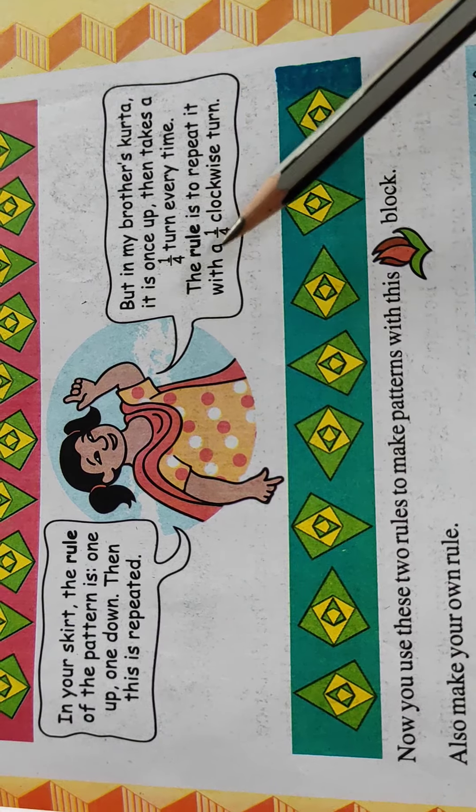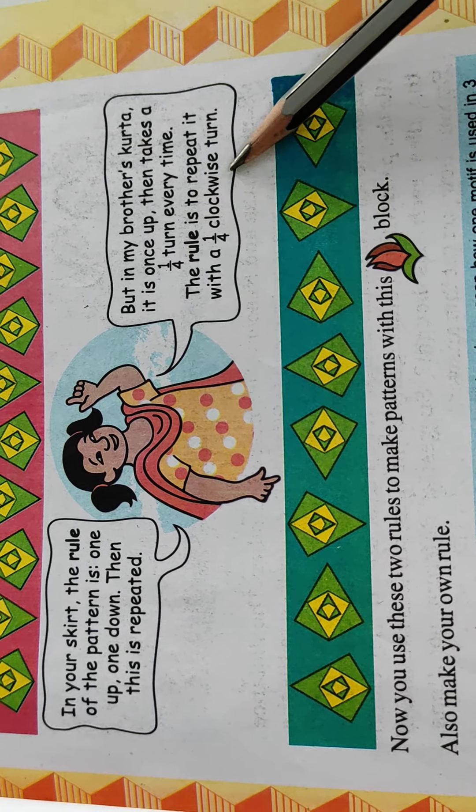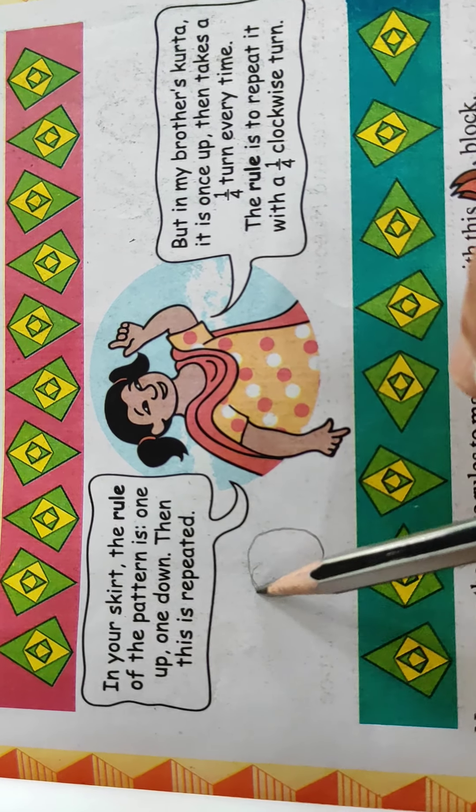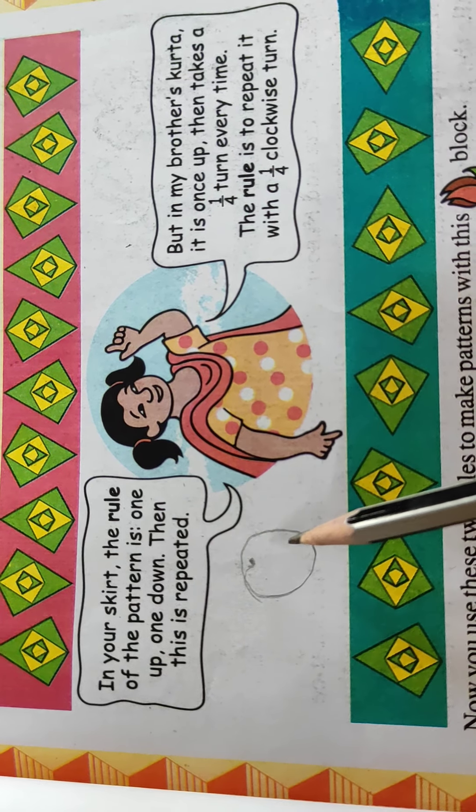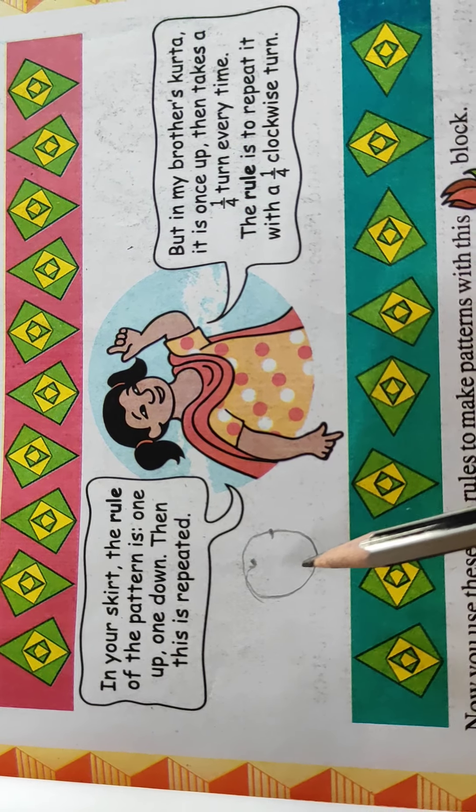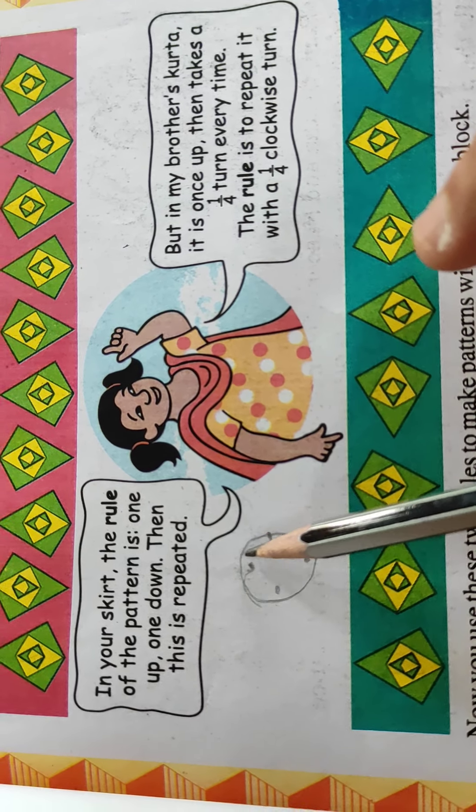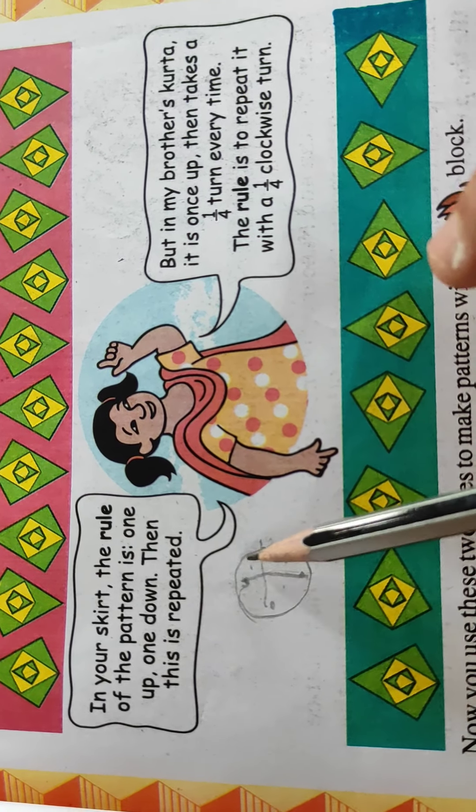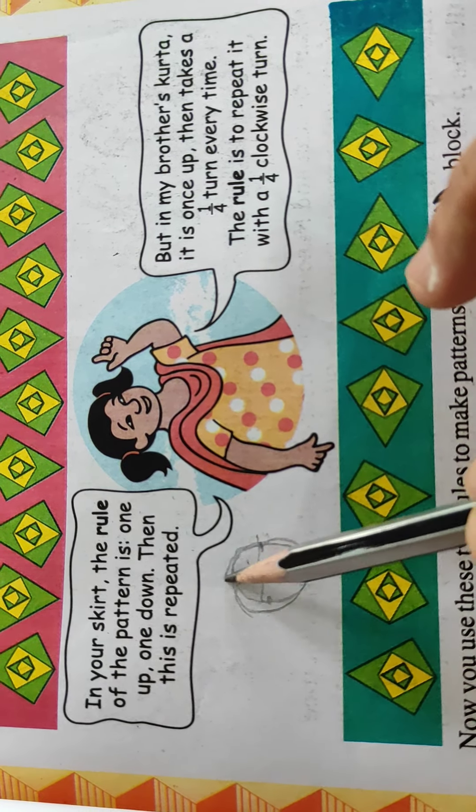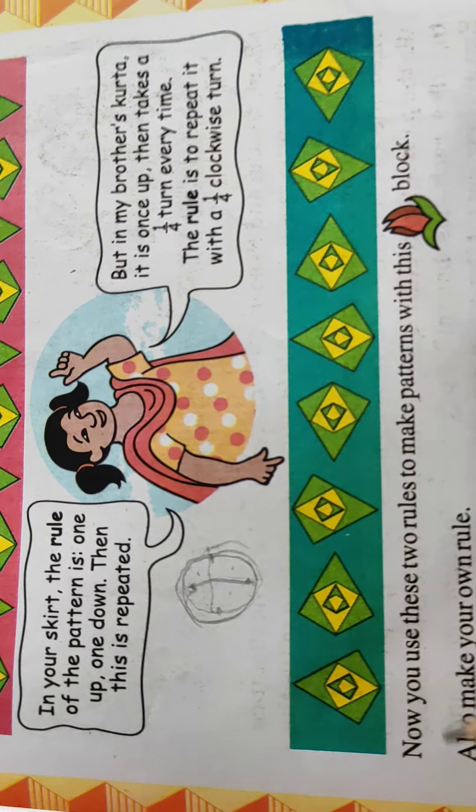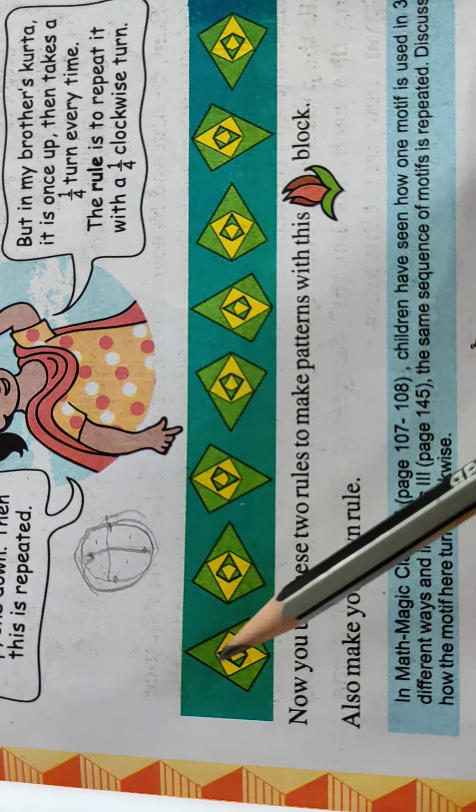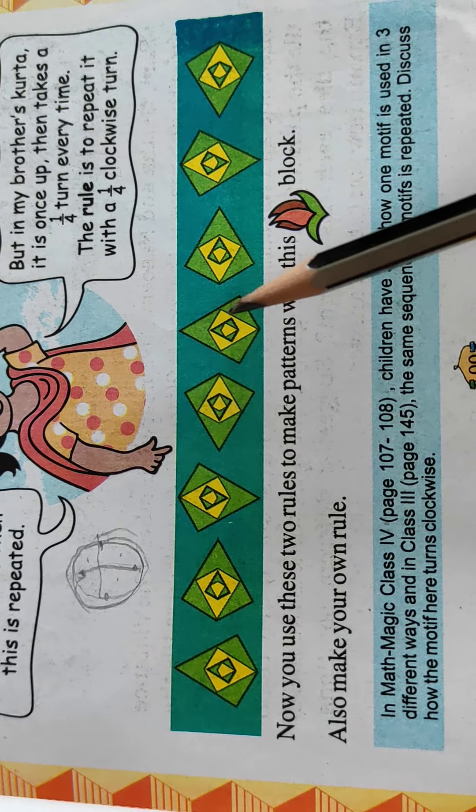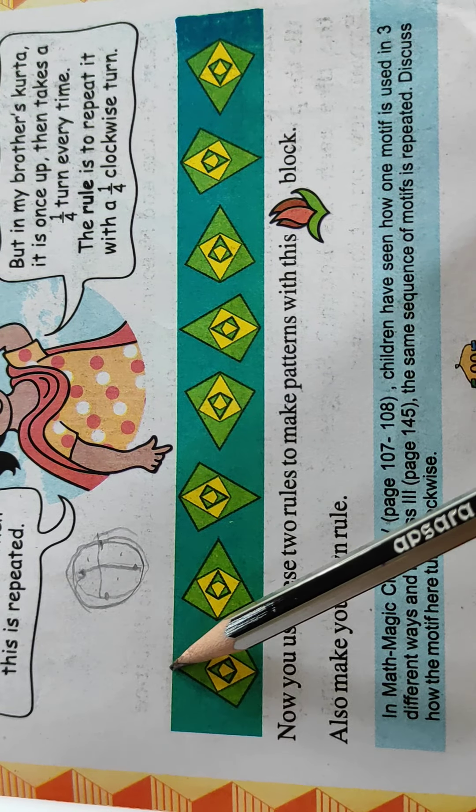The rule is to repeat it with a one-fourth clockwise turn. That means clock. In the clock you can see here 12, 3, 6, 9. So it is called one-fourth. You can see here equal parts is there. Roughly, rough idea I am giving you. So see here one-fourth turn. So what takes? One-fourth. Then again there.